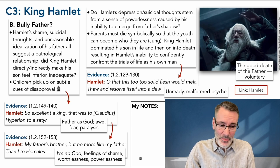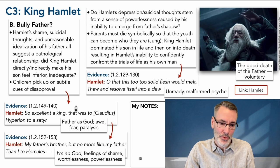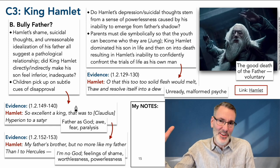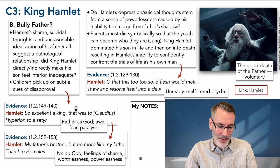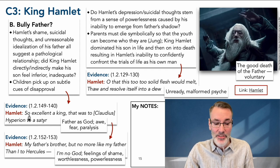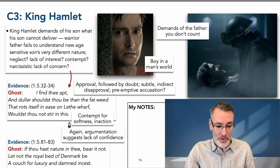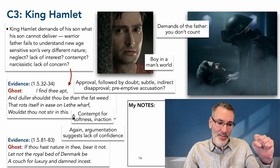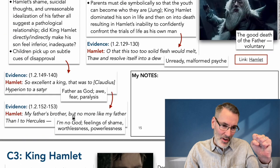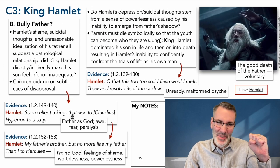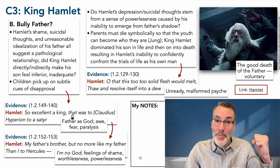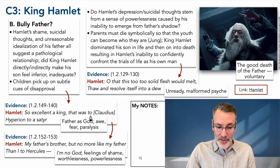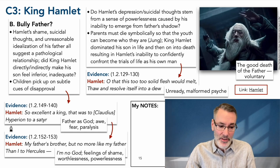Children pick up on even subtle cues of disapproval — a parent just with the raise of an eyebrow or the twitch of a head or the turn of the body can give a signal to a child that the child is inadequate. It can be devastating. In the play, embedded in what the ghost says to the son are these implied insults. So here's the pathological relationship: Hamlet says his father was 'so excellent a king' — so much better than Claudius. My father was like a sun god and Claudius is like a half-goat satyr. There's an idealization; he's comparing his father to four gods, and if the father is seen by the child as a god, that implies awe — and awe means a paralysis, a kind of fear.